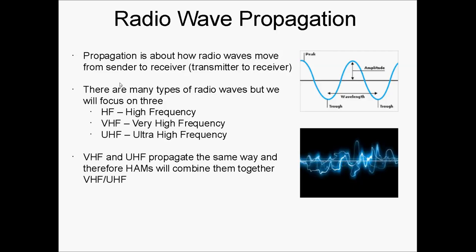This video explains how two basic types of radio waves propagate, or travel, from a transmitter to a receiver. Radio waves travel in two basic ways in our atmosphere, determined by their frequency. We will focus on HF or high frequency waves, and VHF or very high frequency waves. UHF or ultra high frequency waves travel the same as VHF waves.